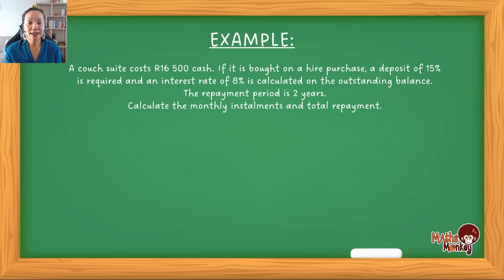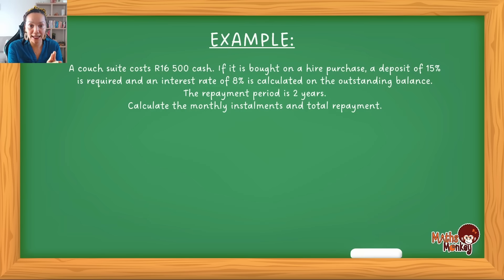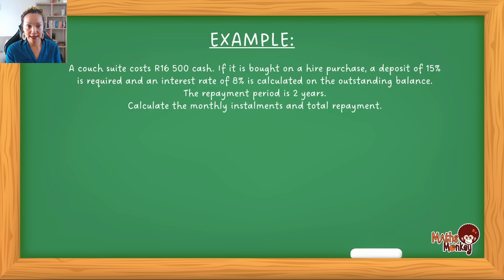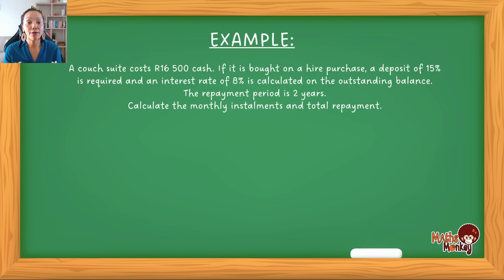Then the interest rate: whatever is left that you owe is going to be charged interest, so you'll have to pay that money plus extra. That 8% is simple interest — it's going to be the same every year. It's calculated on the outstanding balance, meaning how much you still owe after you've paid the deposit. The repayment period is 2 years, meaning you're going to be paying off every single month for the next 2 years — so you'll actually make 24 payments.